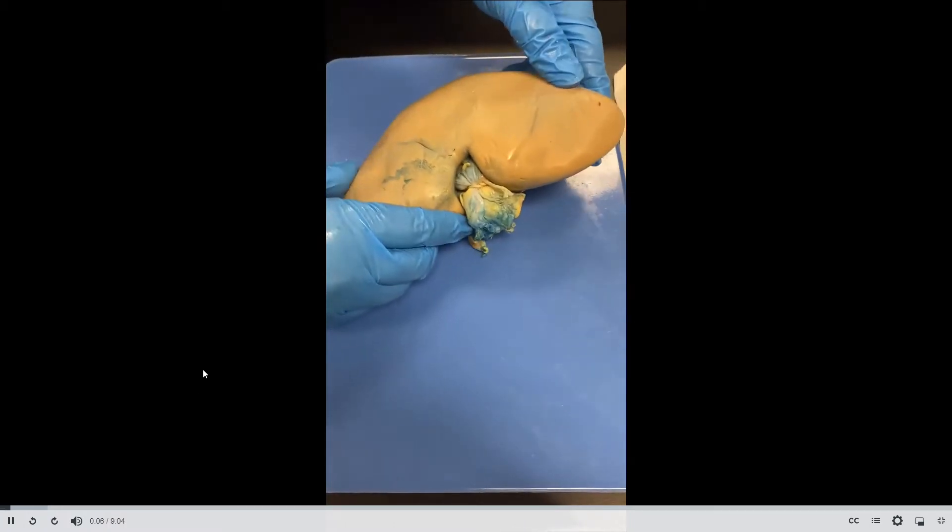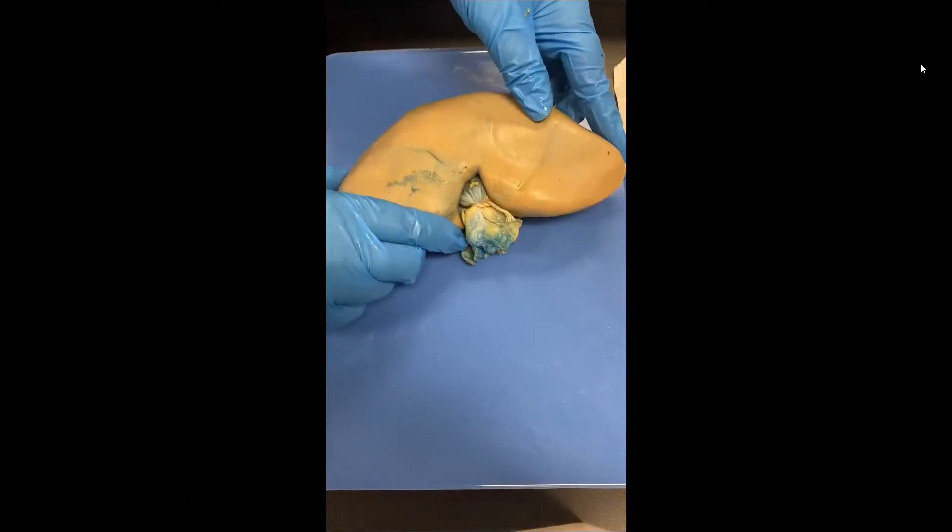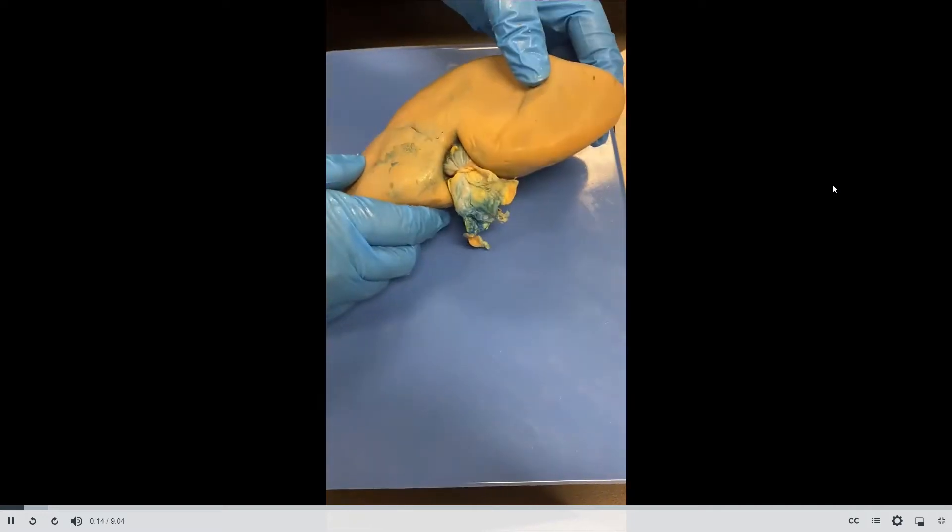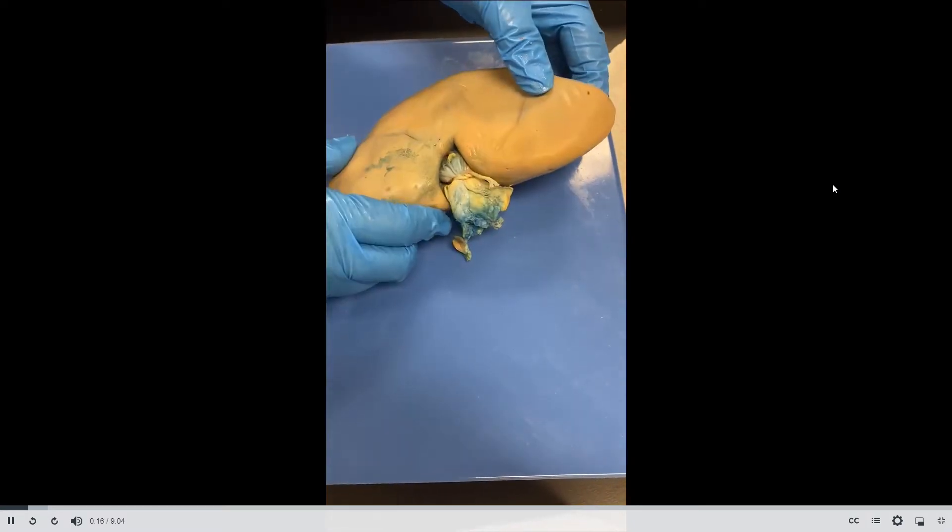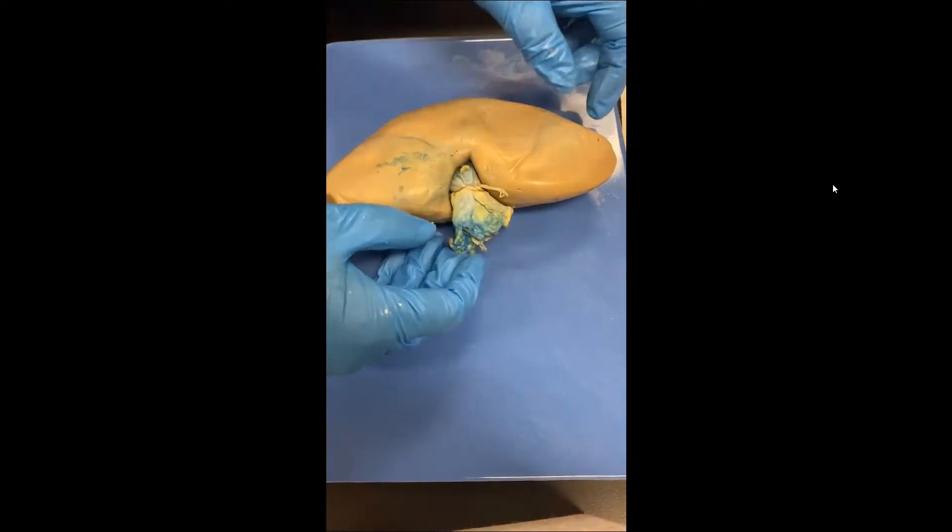Alright, today we're going to dissect the kidney. You may have a sheep's kidney, which is quite a bit smaller. I have a cow's kidney in front of me. You can see how big it is - my whole palm can feel this kidney. Our kidney is about the size of a fist, so this cow's kidney is bigger than our kidney.